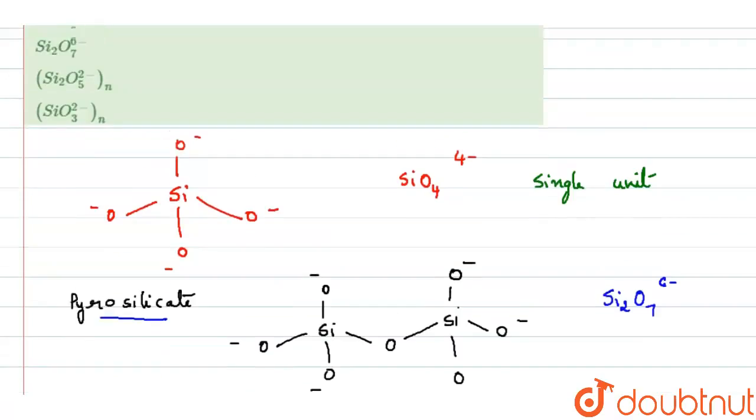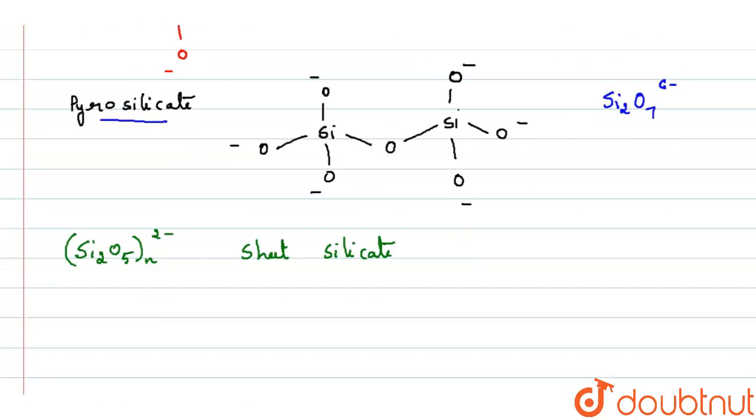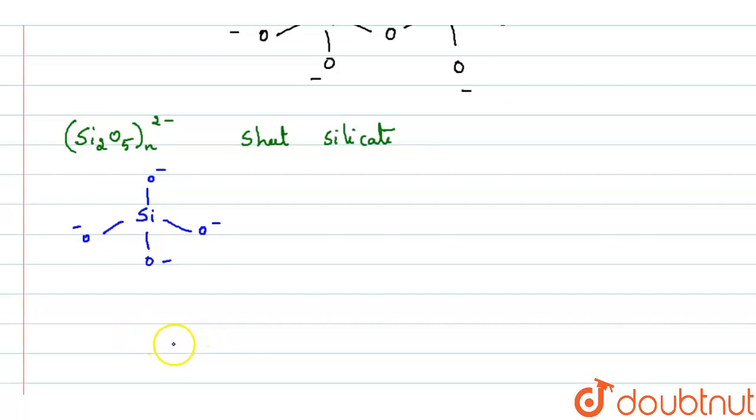Looking at the last option, it is going to be SiO3^2- and n. The structure of this will be derived from SiO4 only. Normally, how do we write SiO4? We write SiO4 like this with the 4 oxygen connected across the silicon with the negative charges across silicon. Now, if I try to make a chain out of this, the chain would look like this.